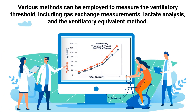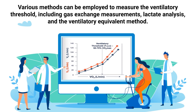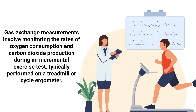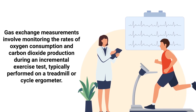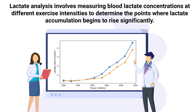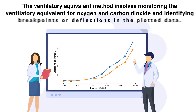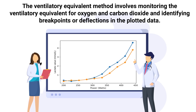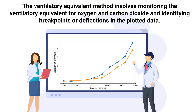Various methods can be employed to measure the ventilatory threshold, including gas exchange measurements, lactate analysis, and the ventilatory equivalent method. Gas exchange measurements involve monitoring the rates of oxygen consumption and carbon dioxide production during an incremental exercise test, typically performed on a treadmill or cycle ergometer. Lactate analysis involves measuring blood lactate concentrations at different exercise intensities to determine the points where lactate accumulation begins to rise significantly. The ventilatory equivalent method involves monitoring the ventilatory equivalent for oxygen and carbon dioxide and identifying breakpoints or deflections in the plotted data.